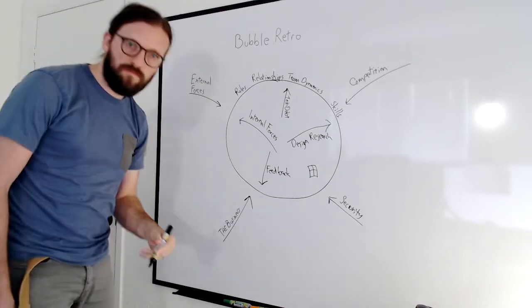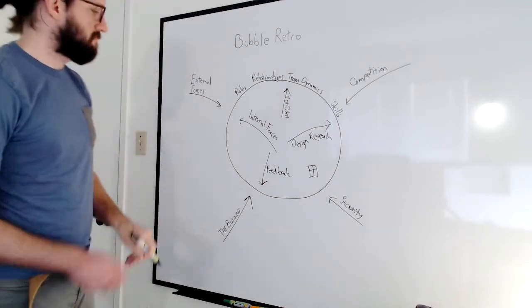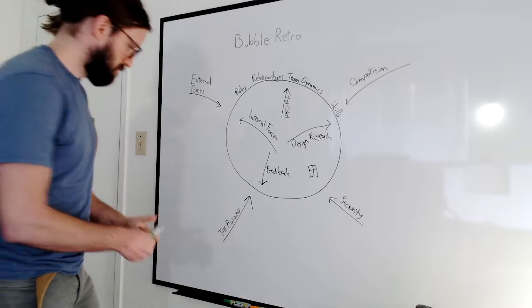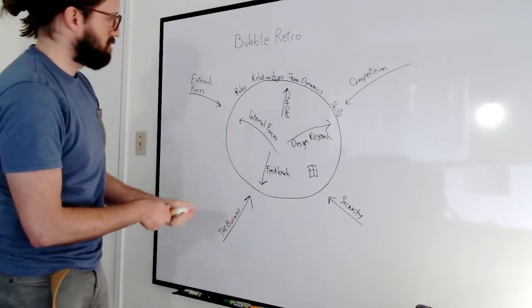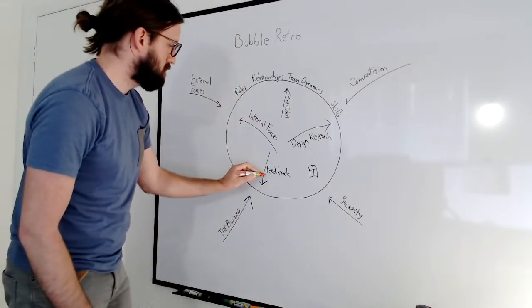If you can slow time down, way down, the bubble can represent a team. The air inside, their charter or mission, the surrounding atmosphere, everything they cannot control.